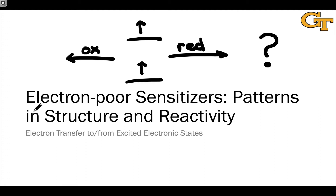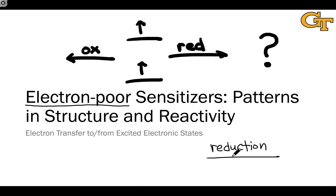This has to do with whether the molecule in question is what we call electron-poor, in possession of electron-withdrawing groups, or electron-rich. In this first video, we'll look at electron-poor sensitizers — excited states of relatively electron-deficient molecules which tend to want to undergo reduction, accepting electrons to form radical anions. Reductive quenching of these electron-poor sensitizers can be an important step in photocatalyzed reactions where the excited state is acting in a catalytic way.